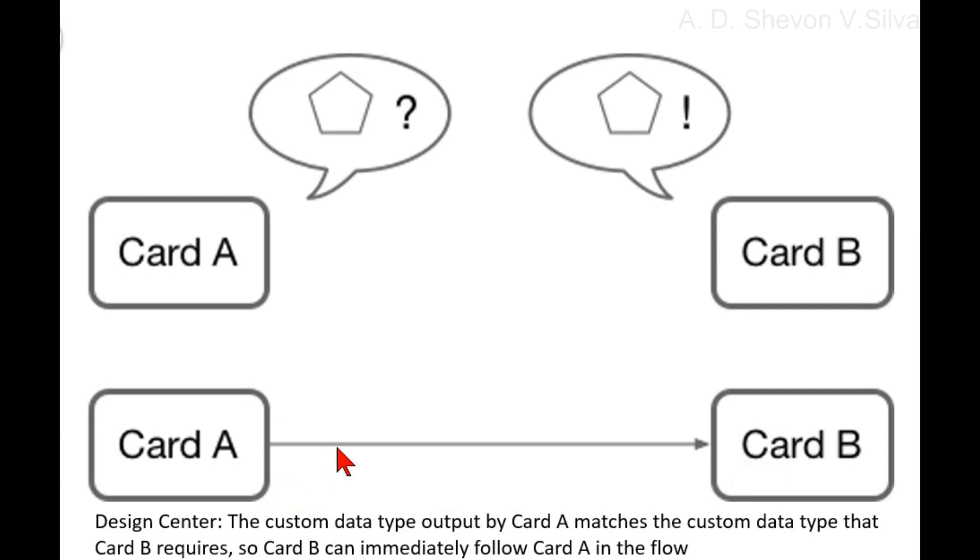If the output of card A uses the same custom data type that card B requires for its input, then you do not need to map the output of card A to the input of card B.